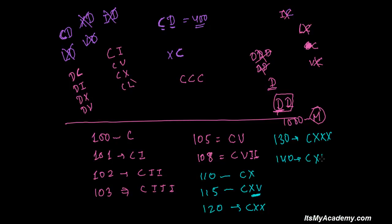For 140, you write C X L, because X L is 40 — so you add 40 to C which is 100. Don't read it as 100 then 110 then 160; after C the sequence must be taken all together. For 150, write C L. For 160, write C L X. For 170, continue the same pattern.